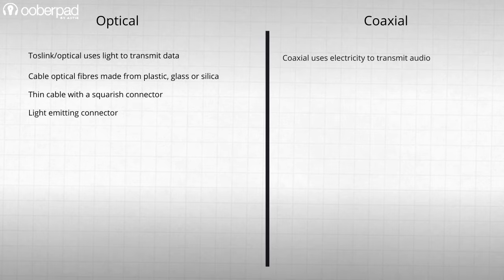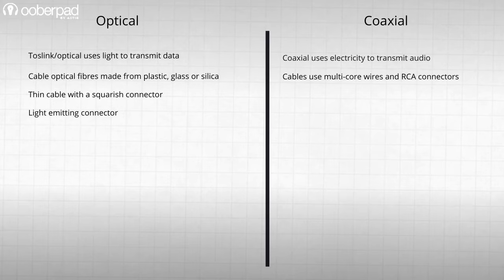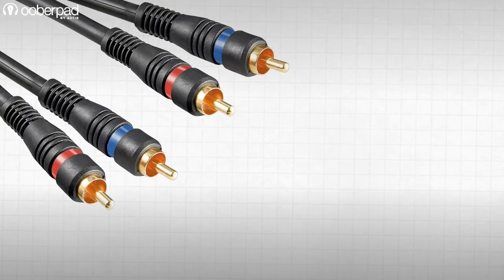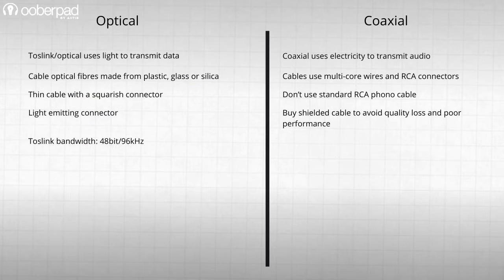Coaxial digital, on the other hand, uses electricity to transmit audio using multi-core wires and is terminated with an RCA connector. Don't be tempted to use a standard RCA phono cable in place of a dedicated coaxial digital cable — they look similar and may even work in limited capacity, but you may experience some quality loss.